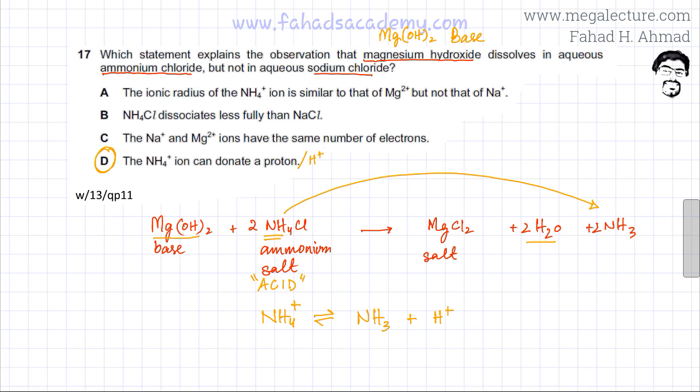The rest of the options are going to be incorrect. The ionic radius of NH4+ doesn't matter when it comes to reactions. NH4Cl dissociates less fully than NaCl - both are very soluble and both dissociate almost fully. The Na+ and Mg2+ ions have the same number of electrons - that's also not an issue. The only reason why this base is reacting with or dissolving in NH4Cl is because this is capable of acting as an acid.